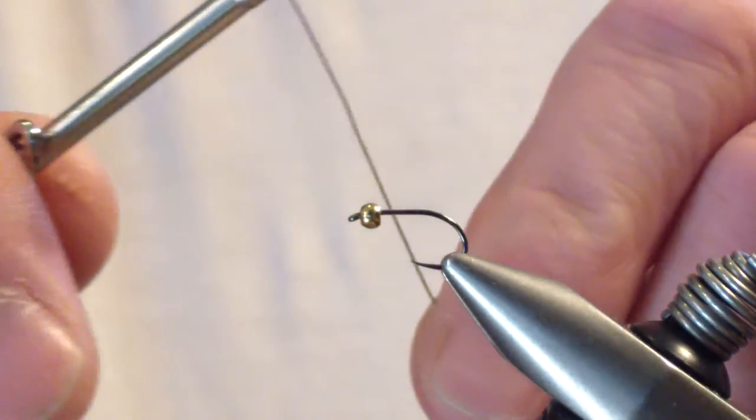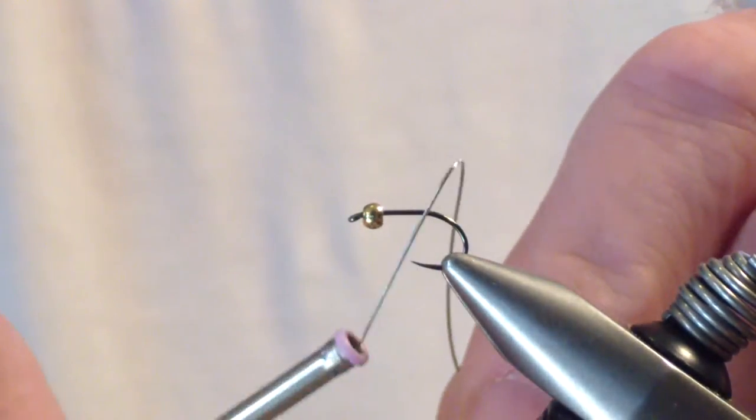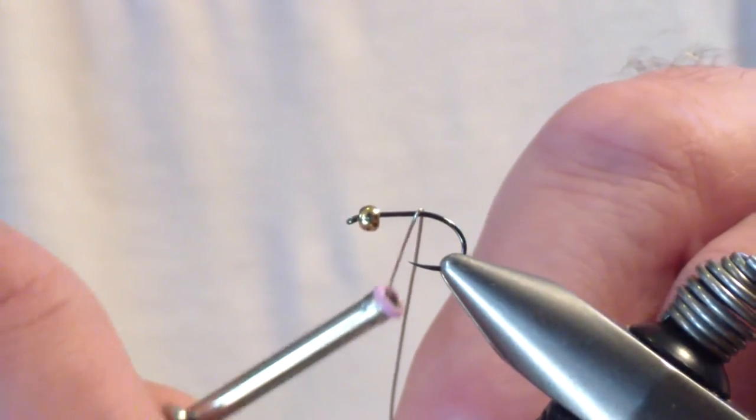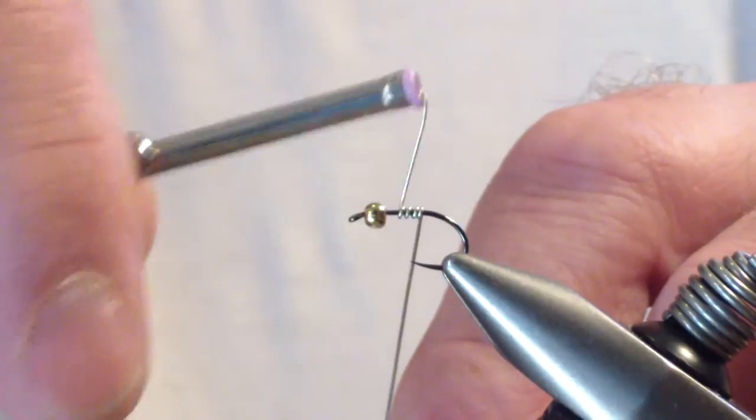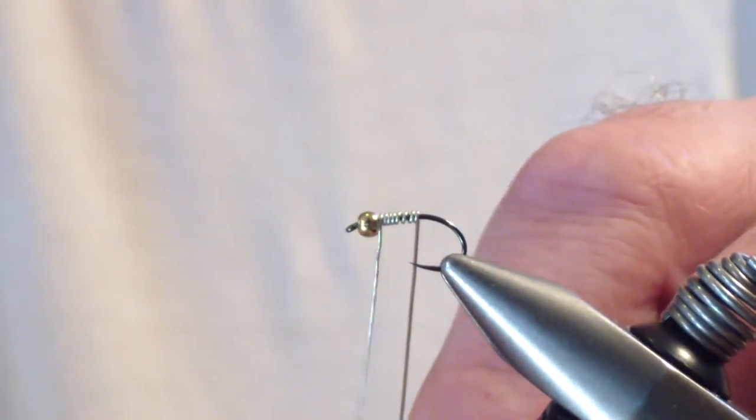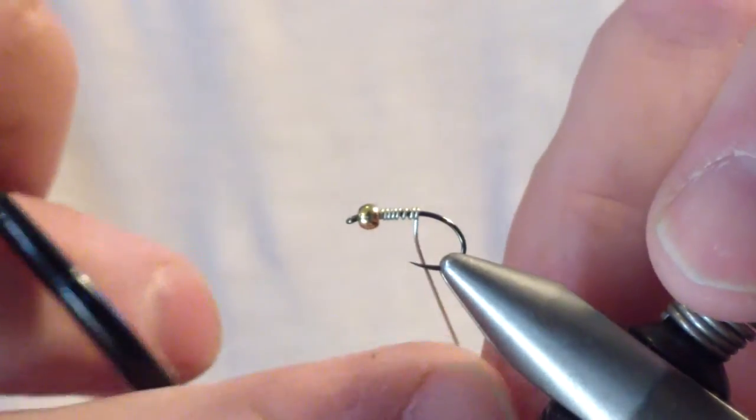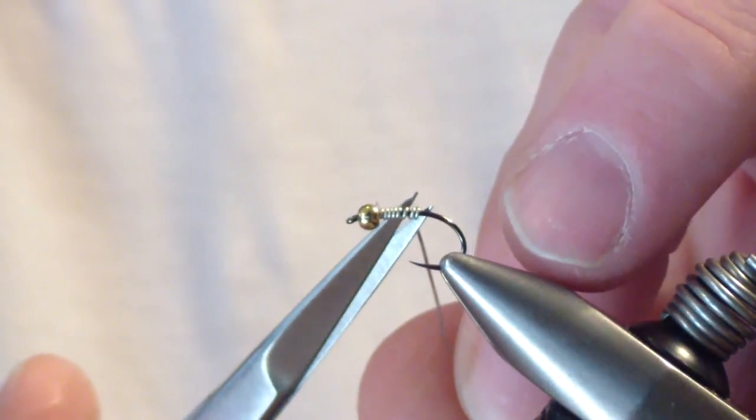We're also going to tie in .015 lead substitute wire. I'm going to start at the point of the hook and wrap forward to the bead. We have a gold tungsten bead. I prefer gold over copper for this pattern.